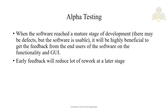The next type is alpha testing. When software reaches a major stage of development — it may still have defects but is usable to some extent — it is highly beneficial to get feedback from end users. The working software is given to the client; they test what has been built and give feedback on functionality. This early feedback reduces a lot of work at later stages.